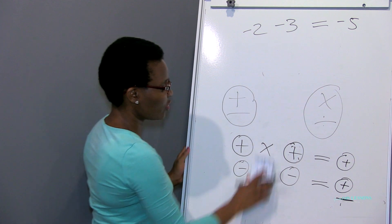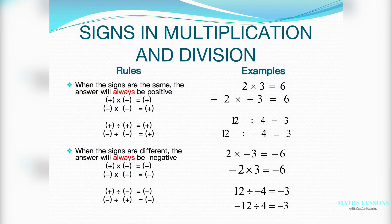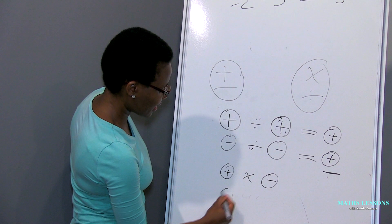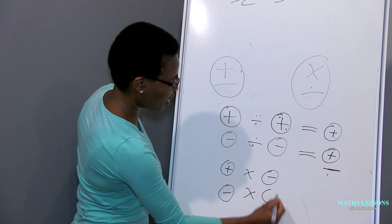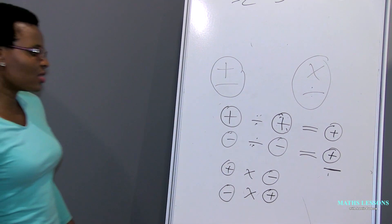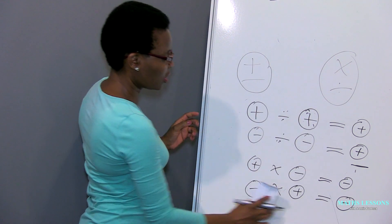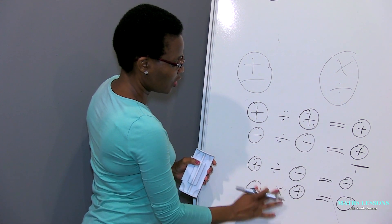When the signs are the same, you get a positive answer in multiplication, and this applies equally to division. And what happens when the signs are not the same? When the signs are not the same — it doesn't matter which number has which sign — when you're multiplying or dividing, you will always get a negative. The moment you multiply or divide two numbers with different signs, you get a negative answer.